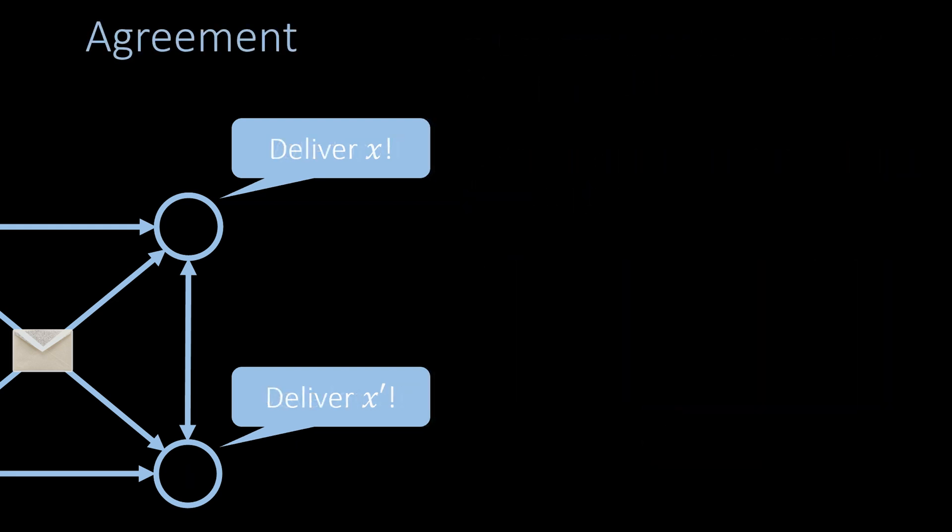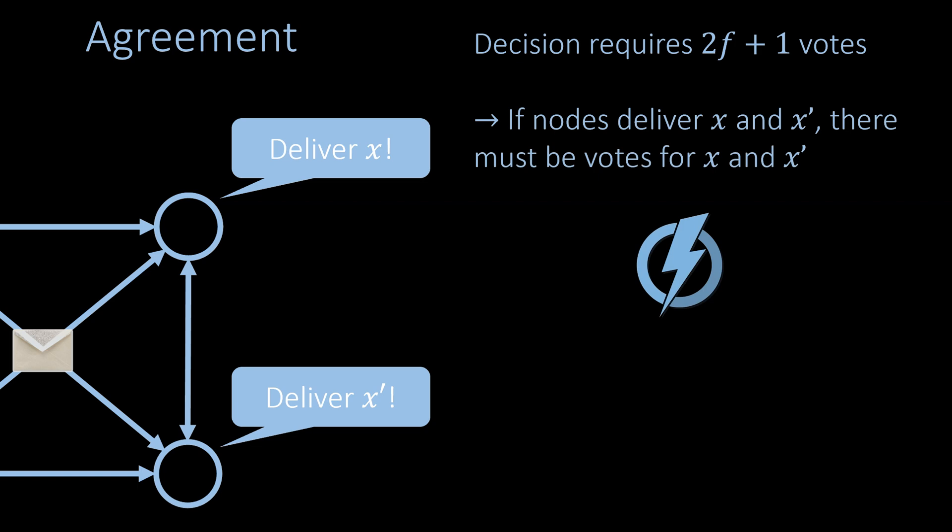Let's now focus on the four properties, starting with agreement. If two correct nodes deliver different values, then there must be at least 2f + 1 votes for both values — that is, at least f + 1 correct nodes must vote for each of the two values. However, this is not possible as we just showed that correct nodes never vote for different values.